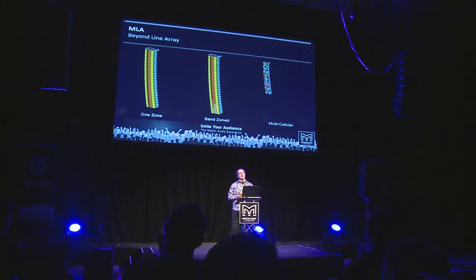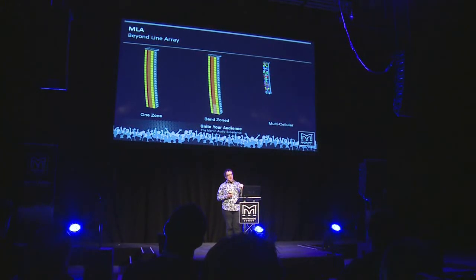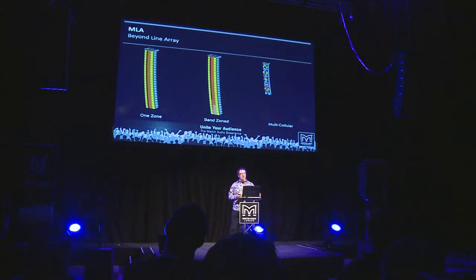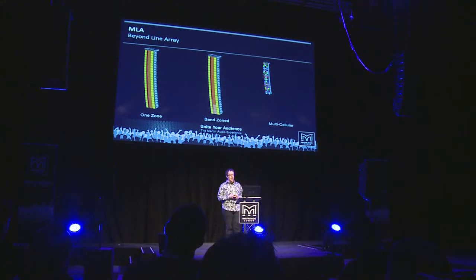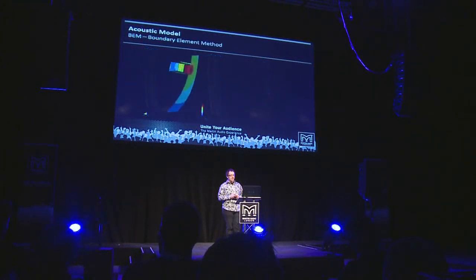But the problem with that is that it needs to give you the right answer. So that means your acoustic model has got to be very, very accurate. And when we set about designing the MLA system, we set ourselves a goal of plus or minus 1 dB from the predicted to the measured loudspeaker system. We did an AES paper about three years ago which confirmed that we were able to achieve those results.